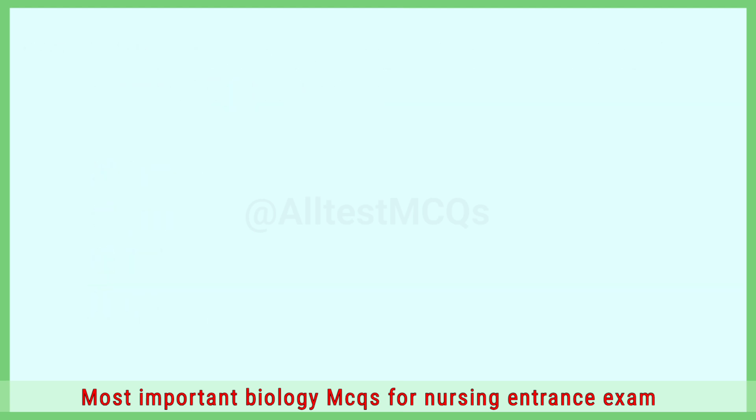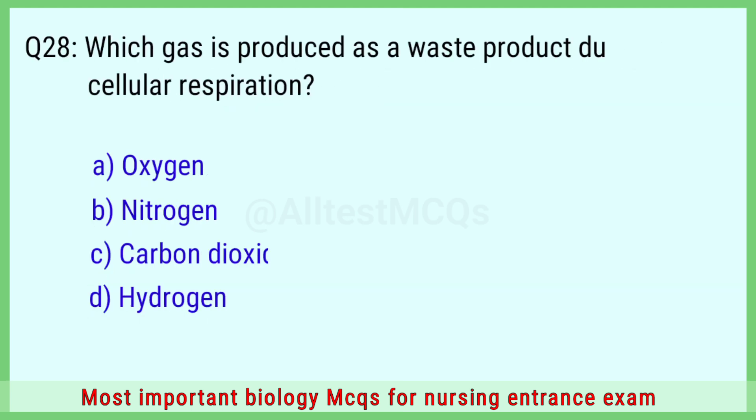Question number 28: Which gas is produced as a waste product during cellular respiration? The right answer is option C: carbon dioxide.